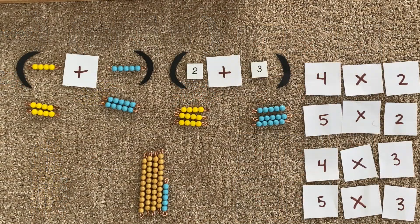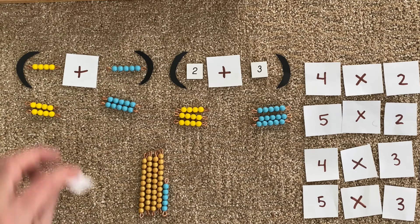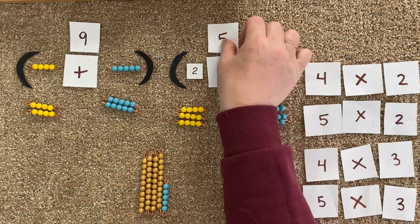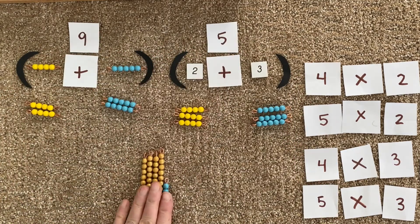Now there's another way to check this too. What's four plus five? Nine. And what's two plus three? Five. And what's nine times five? Forty-five.